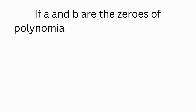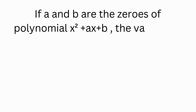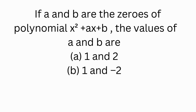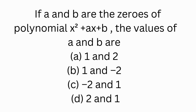If a and b are the zeros of the polynomial x² + ax + b, then the values of a and b are: (1) 1 and 2, (2) 1 and minus 2, (3) minus 2 and 1, or (4) 2 and 1.